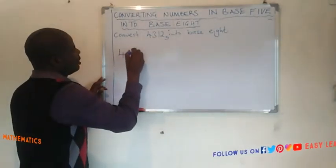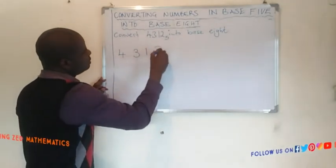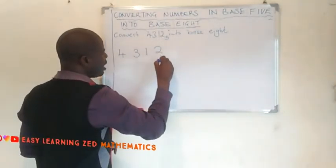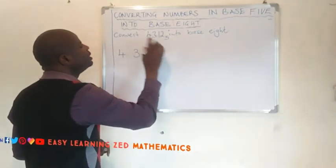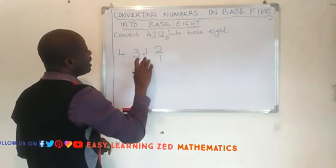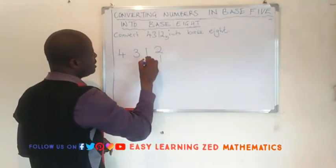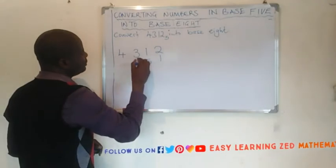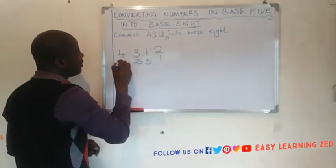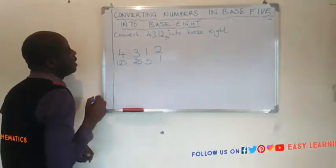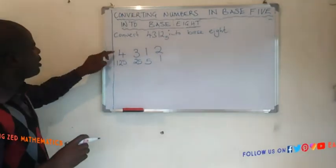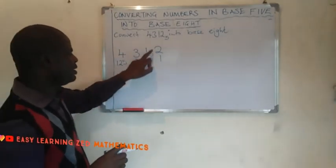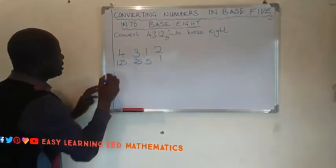We have the digits 4, 3, 1, 2. Let's identify the place values of these numbers. The place value of 2 is 1 in base 5. The place value of 1 in this position is 5. The place value of 3 in this position is 25. The place value of 4 in this position is 125. Now we are going to multiply each number by its place value.